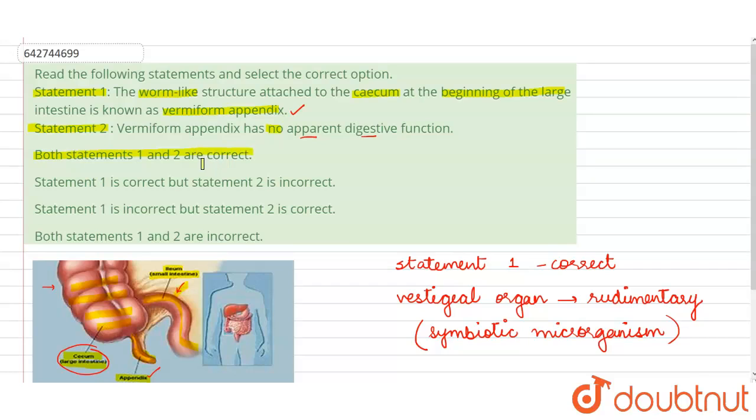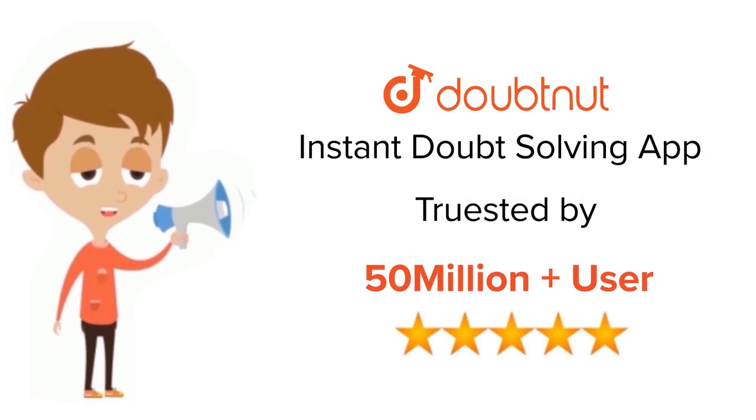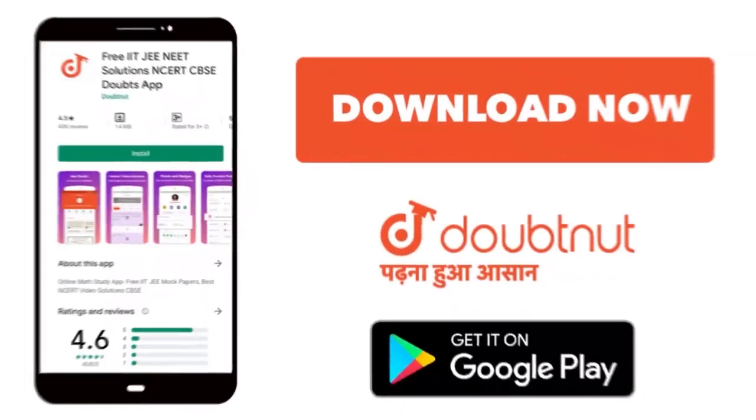and two are correct. So this is all for this query. Thank you. For class 6 to 12, IIT-JEE, and NEET level, trusted by more than 5 crore students, download Doubtnet app today.